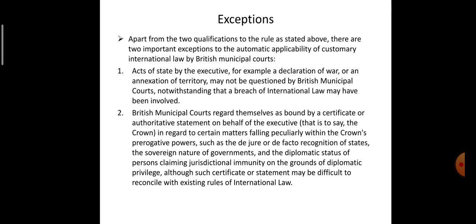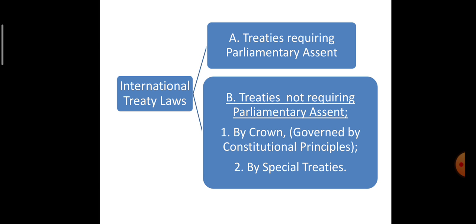Coming to the treaty laws — international treaty laws — there are again two conditions to be followed. Even treaties are international law. First, some treaties require parliamentary assent, and some do not require parliamentary assent, because there are special treaties and because the treaties are made by the Crown with the governing principles of the constitution, so they do not need any parliamentary assent.